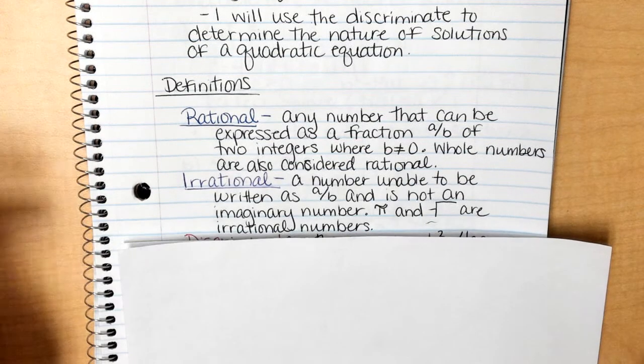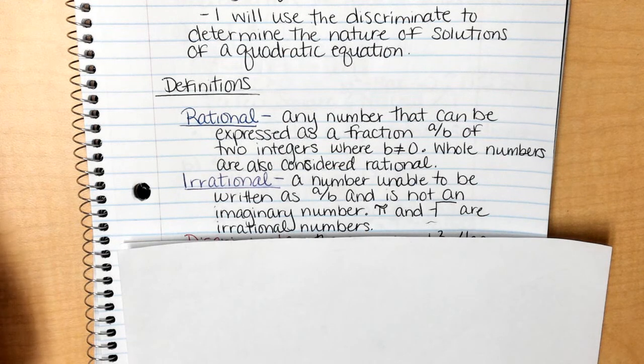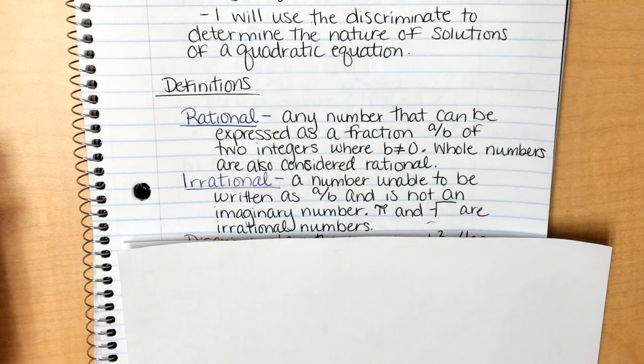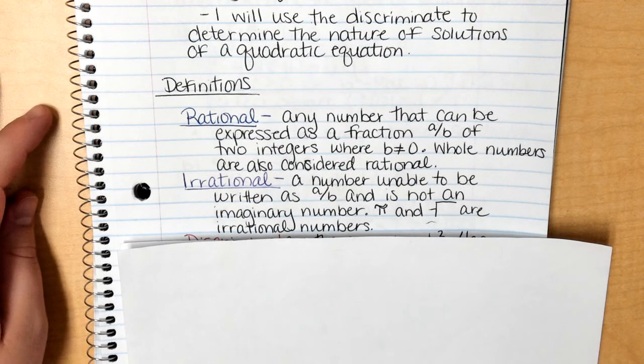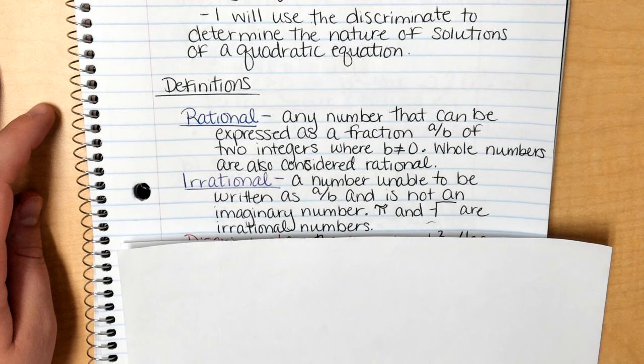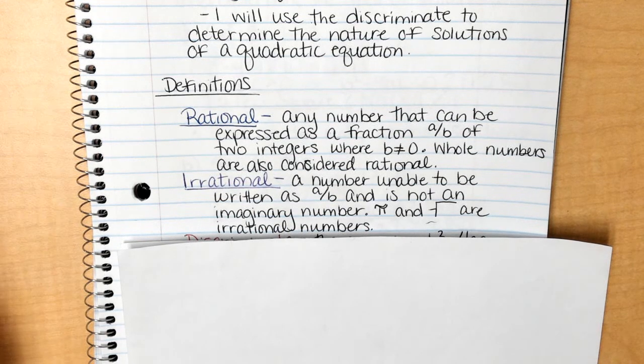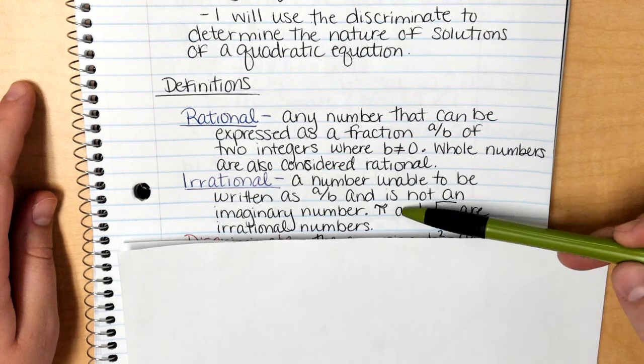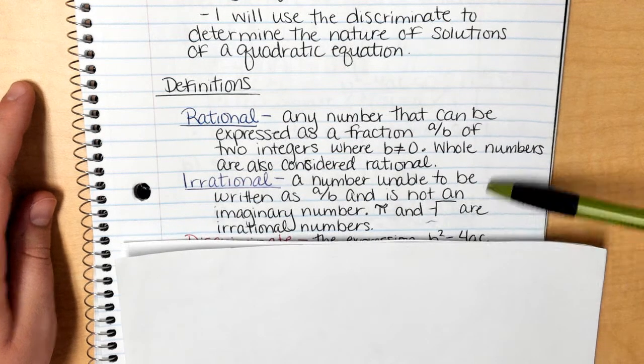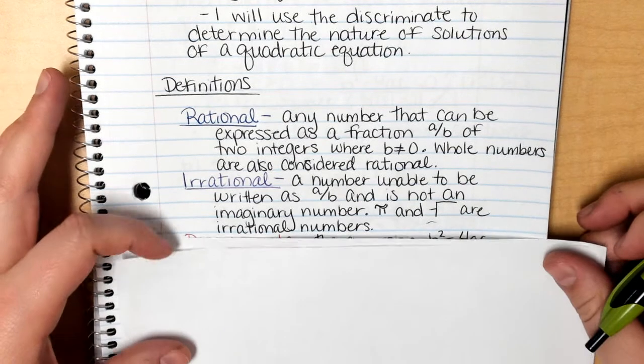Irrational numbers are numbers unable to be written as a over b and is not an imaginary number. So if you have 2i, 2i is an imaginary number, it is considered irrational.